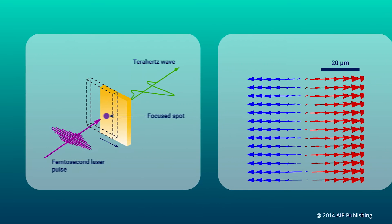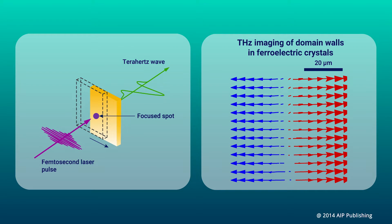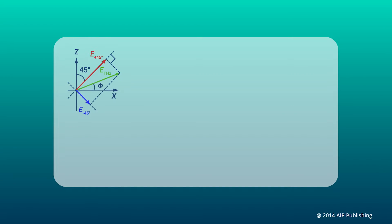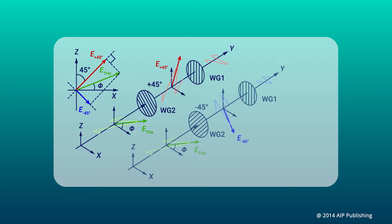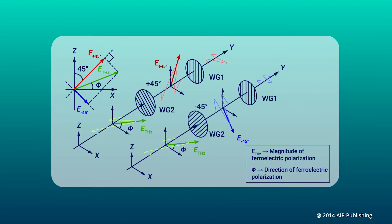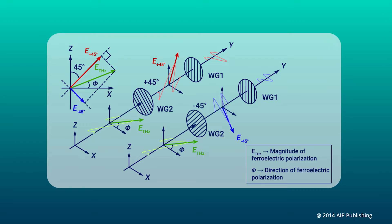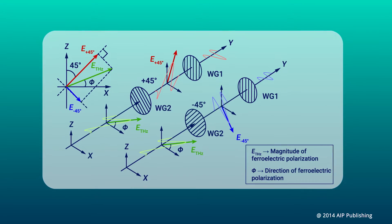They showed that terahertz radiation can be used, for instance, to image the domain walls in ferroelectric crystals. This could be done by measuring the amplitude and phase of the terahertz radiation, which corresponded to the magnitude and direction of the ferroelectric polarization, respectively.